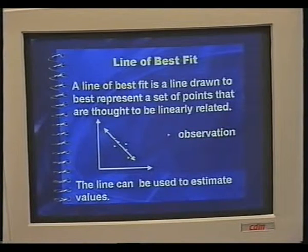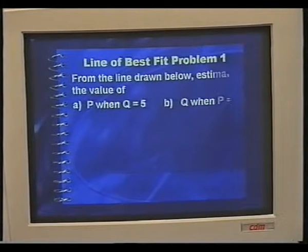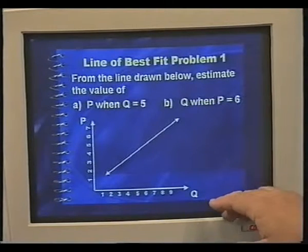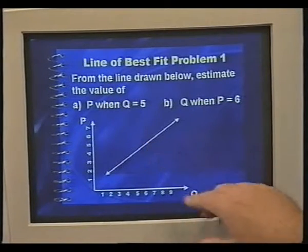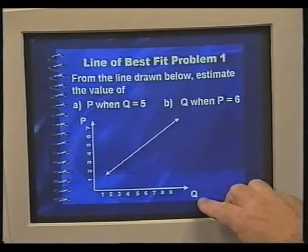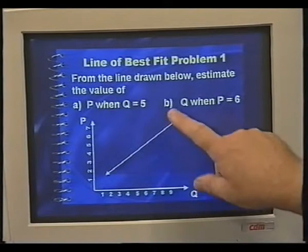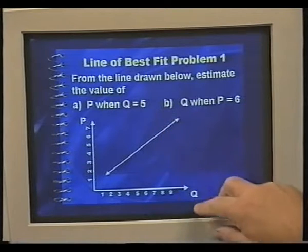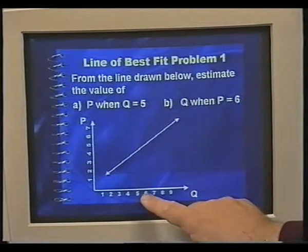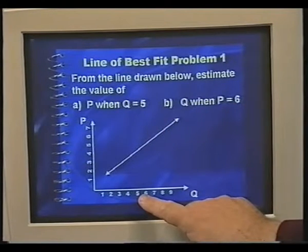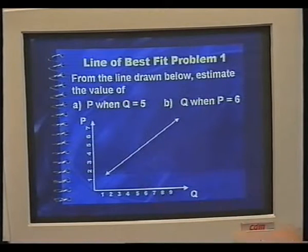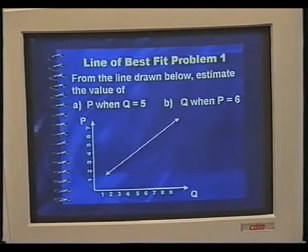Let's go into some problems like this. Here we've got the first one — we've got a line drawn over here. We've got two variables, p and q. Here's the line. The first question asks: what is the value for p when q is equal to 5? So I select the value for q equals 5, I go to the line, and I see what value of p best represents that point.